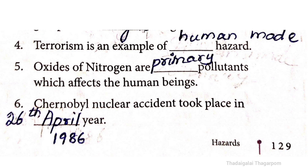Terrorism is an example of human-made hazard. Fifth question: Oxides of nitrogen are dash pollutants which affect human beings. The answer is primary.